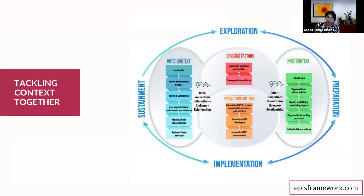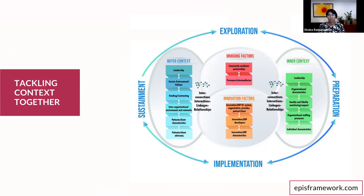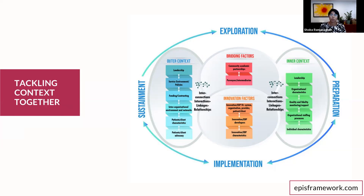The other motivation for the why of participatory approaches is that we can tackle context together. Looking at the EPIS framework from Greg Aarons and colleagues, you can see the sheer number of things we need to think about in terms of factors that might influence implementation success or failure — whether it's the outer context, the inner context, our bridging factors, or characteristics of the EBI itself and innovation factors. That's a lot for a team to manage. So if we draw expertise from a range of stakeholders to fill in this picture, and think about the needs, context constraints, and opportunities of those stakeholders, we're much more likely to be successful in taking the systems approach we want to take in this work.